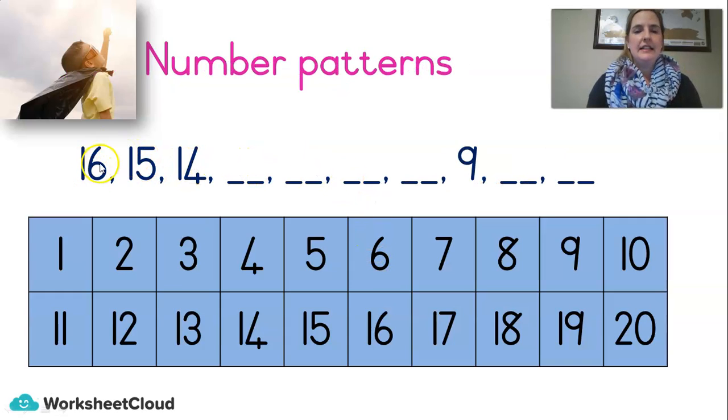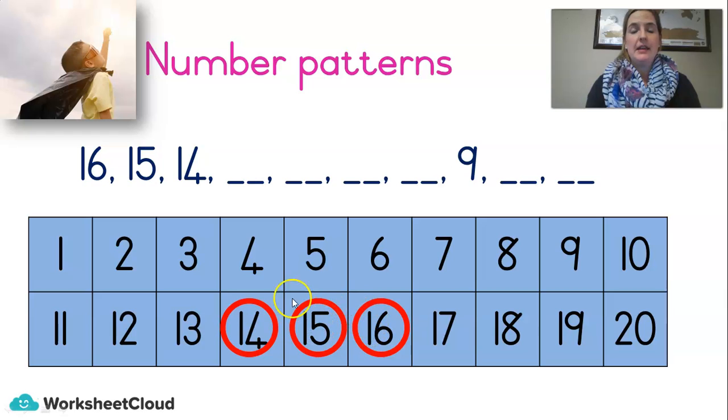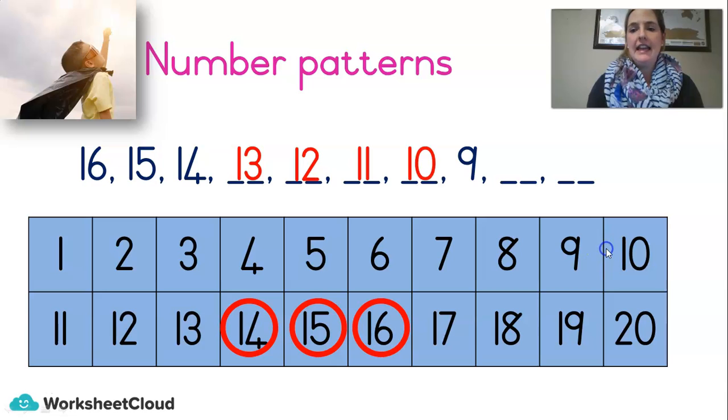Here's one: 16, 15, 14. So missing numbers, a help number, and then two more missing numbers. Let's ask ourselves: is it getting bigger or smaller? It's getting smaller. Look, 16, 15, 14 - each time it gets smaller. And by how much? Just one. So what's next? 16, 15, 14, 13, right? 12, 11, 10. And we've got our help number 9, and we're right on track. And then 8, 7. And look at that. We did that right now by ourselves, just using our number questions in our toolbox.